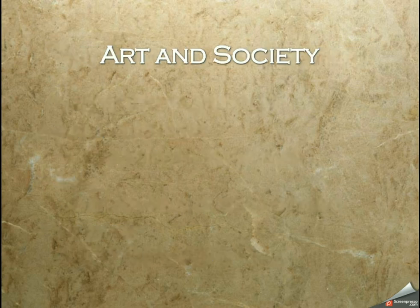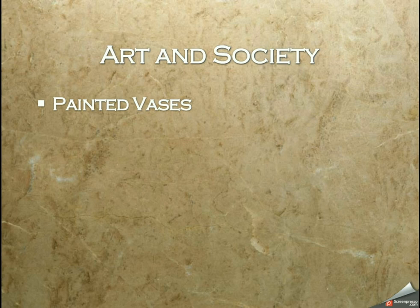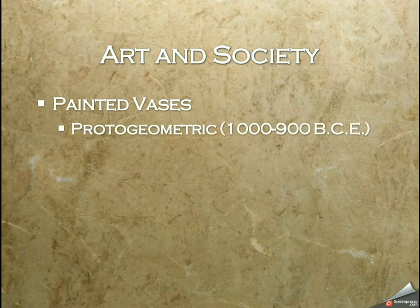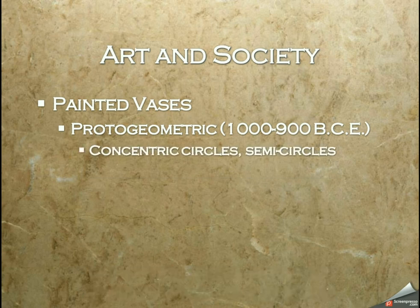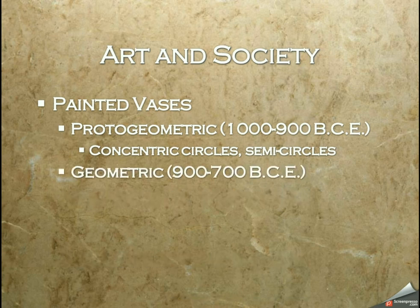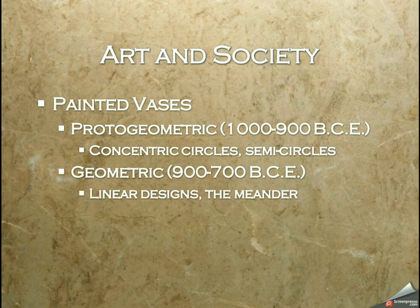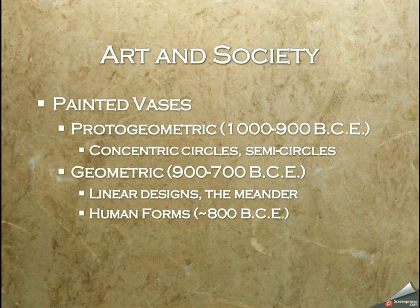When we talk about art and society in ancient Greece, the oldest things we notice are the painted vases. The proto-geometric period, starting around 1000 BCE, focuses on concentric circles and semicircles with elaborate designs painted on vases. This likewise occurs in the geometric period, starting roughly 100 to 200 years later. We see linear designs, meandering lines, and also some of the very earliest human forms, circa around 800 BCE.